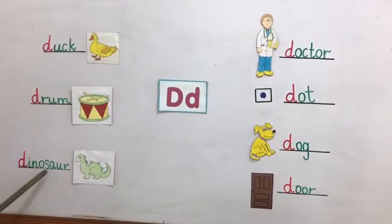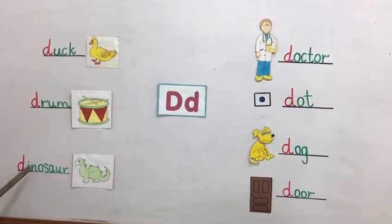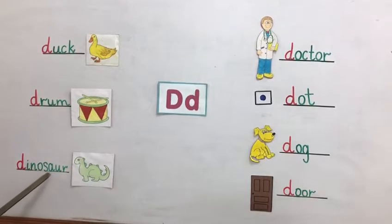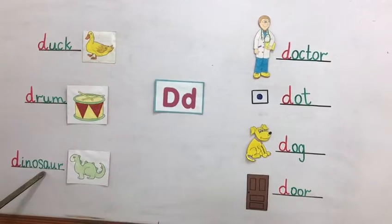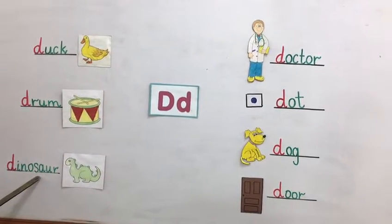D — Dinosaur. D — Dinosaur. A dangerous dinosaur.